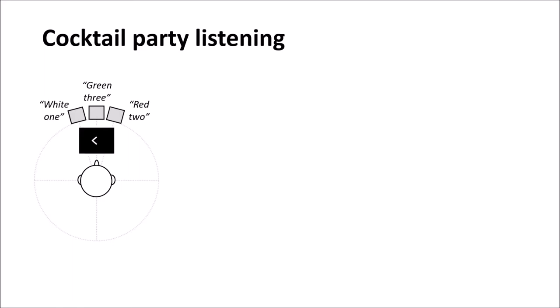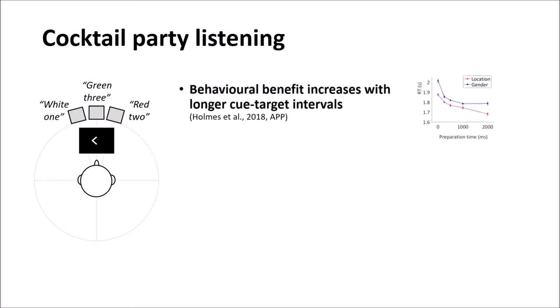In many situations attention isn't all or none but rather fluctuates over time even when the attribute that's attended isn't obviously time itself. For example, reaction times progressively improve as an instructional cue is presented longer in advance of the target talker.